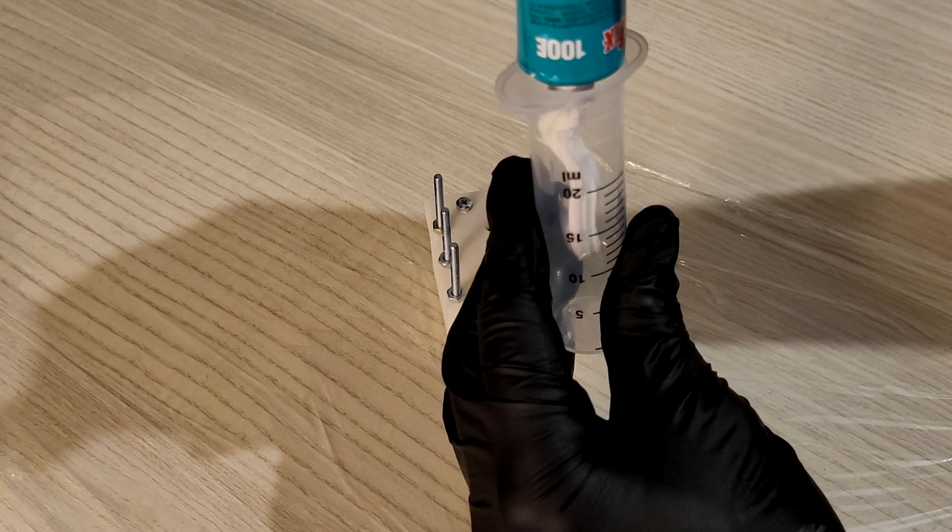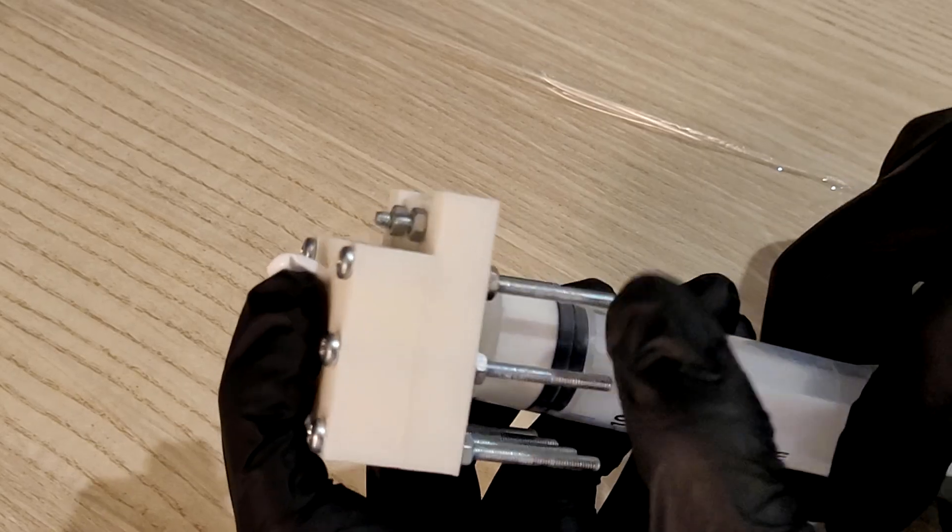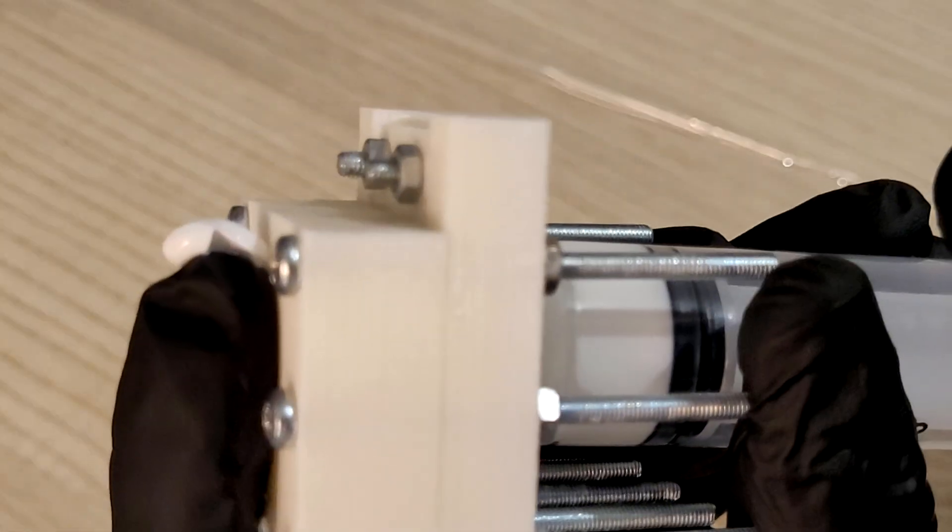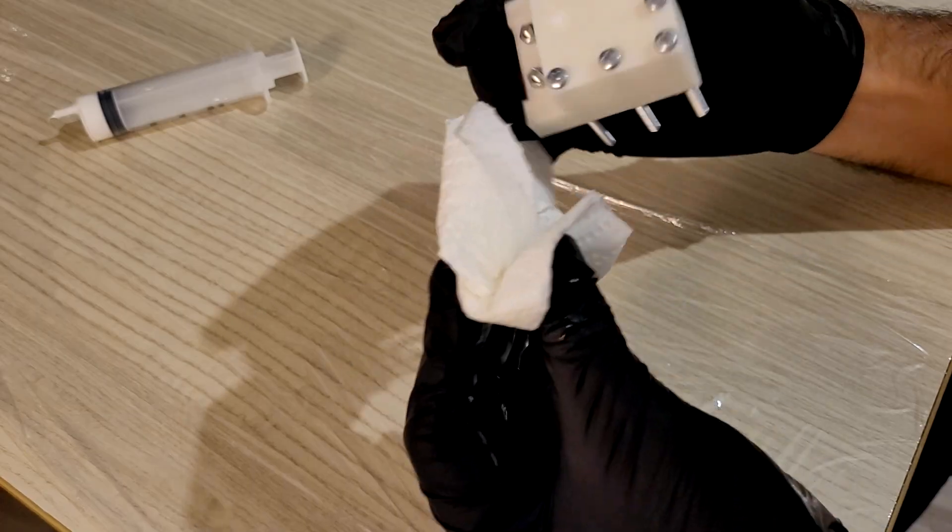I'm filling the syringe with caulk and injecting it until it comes out of all the air vents. In production, robots use a tested fixed amount of material every time, but I don't have that accuracy, so I'm wasting quite a bit of material. Then I wipe it clean and leave it to cure.